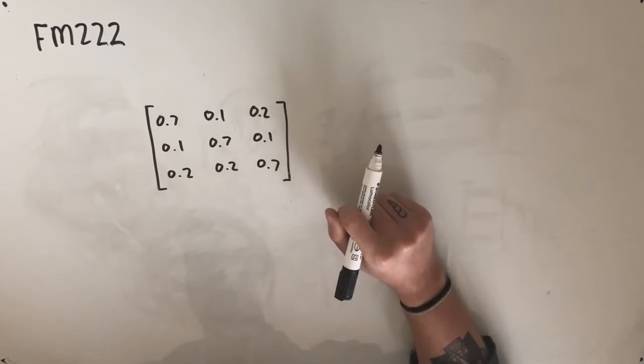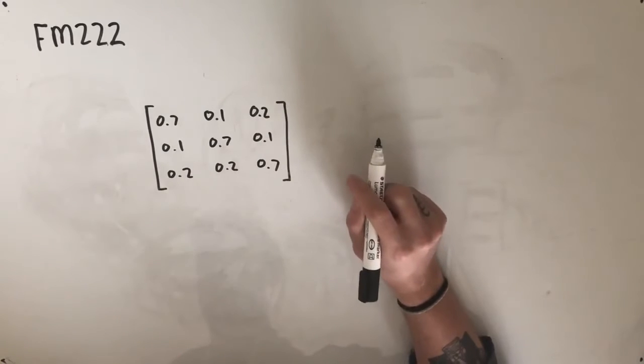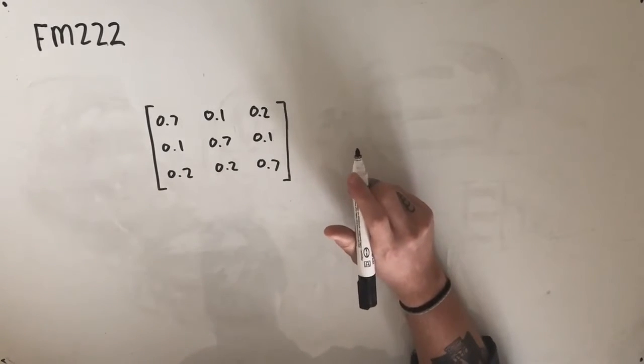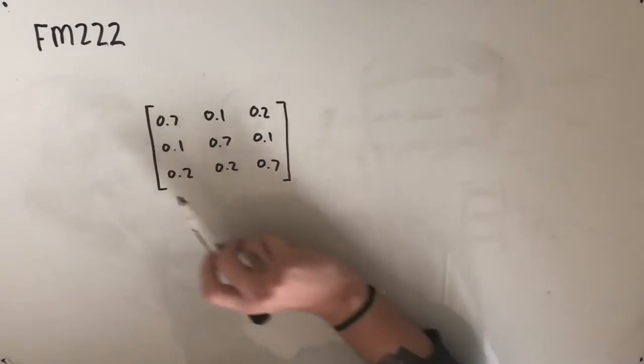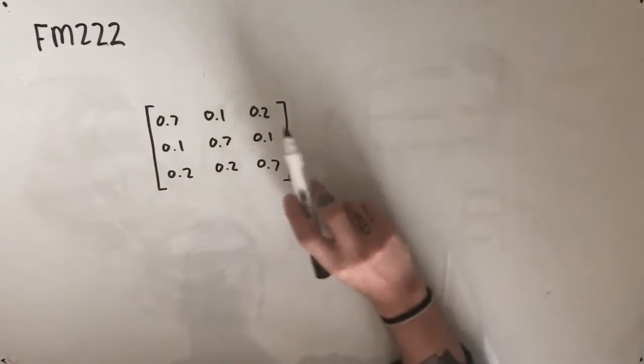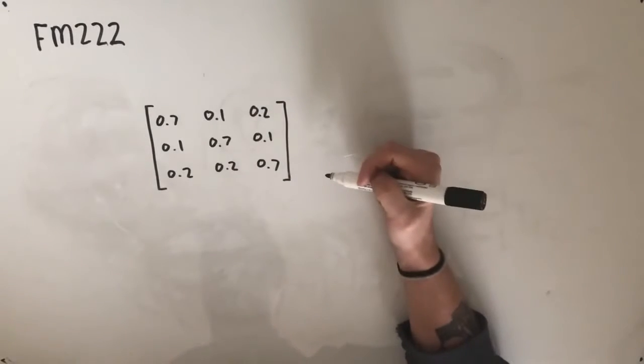The regular customers buy one type of breakfast each per day and choose the type of breakfast they buy according to the following transition matrix, T, and then we're given this transition matrix. Now I've left off the labels, but you guys will have them there in your books.